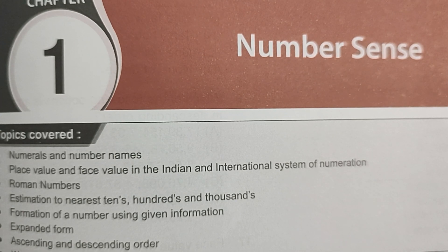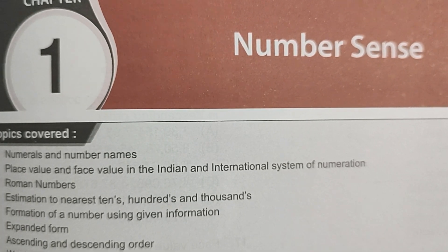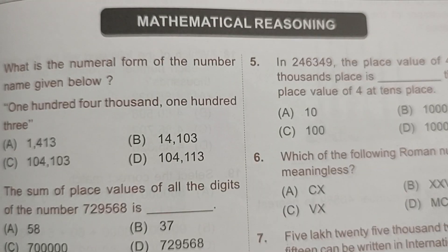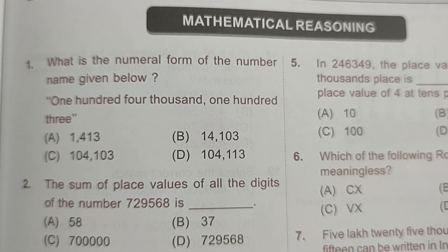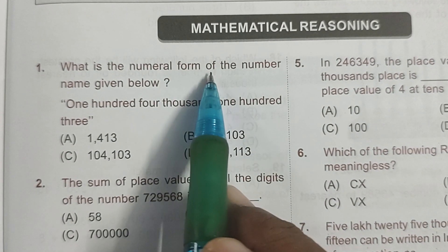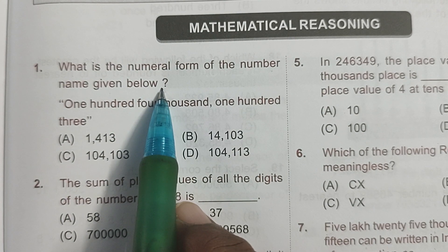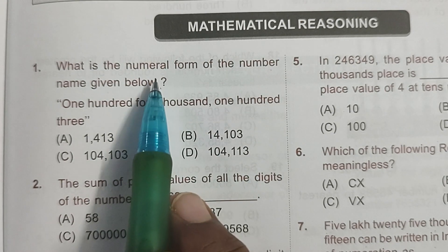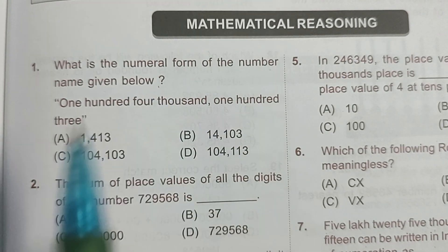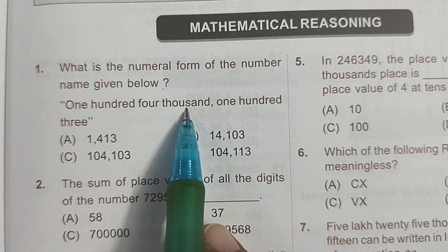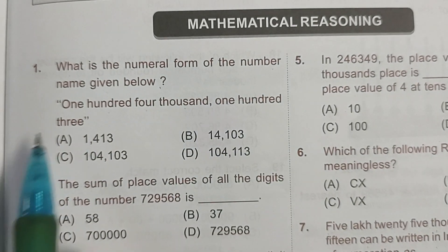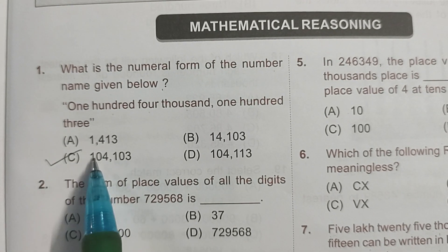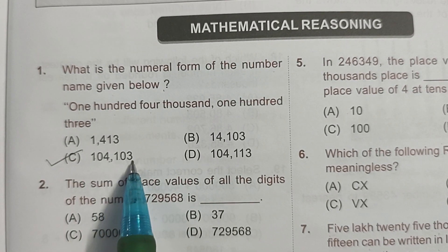Let's start our first question from Chapter 1: Number Sense. What is the numeral form of the number name given below? The first question: the number name is one lakh four thousand one hundred and three, so its numeral form is 104103.